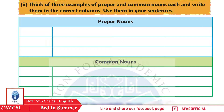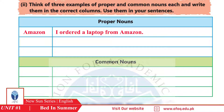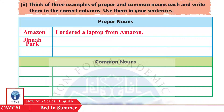Proper noun ki three examples: first is Amazon — the sentence is: 'I ordered a laptop from Amazon.' Second proper noun is Jina Park.